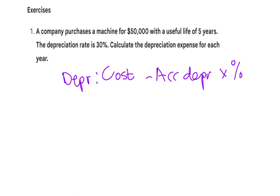We are going to calculate using the reducing balance method, also known as the diminishing balance method. This is a very short and easy formula. To calculate depreciation, it's going to be your cost less your accumulated depreciation — meaning your depreciation for all the previous years added together — multiplied by the percentage, giving you the depreciation for that specific year.